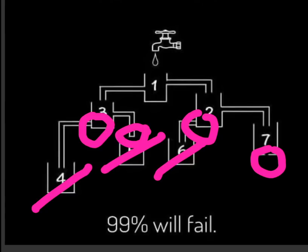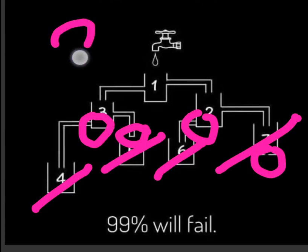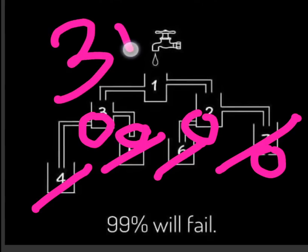Cap 7 has a hole beneath it at the base, so it's never going to be full — cap 7 is out of the contest. Considering all this, it means cap 3 will be filled first. So cap 3 is the correct answer. Thanks for watching.